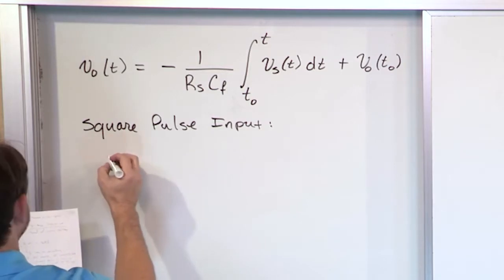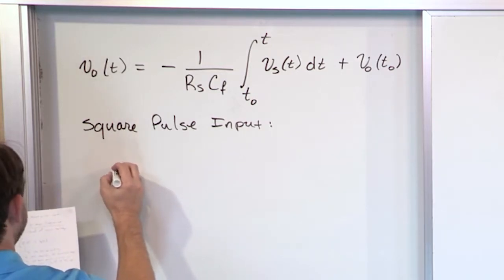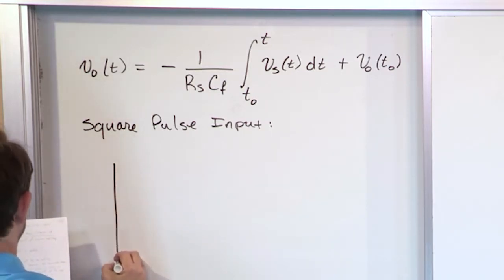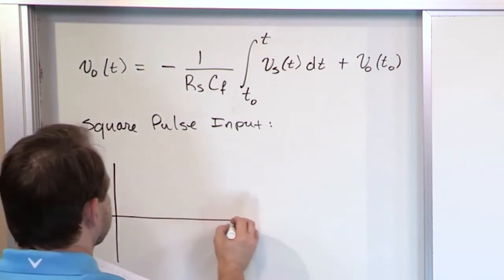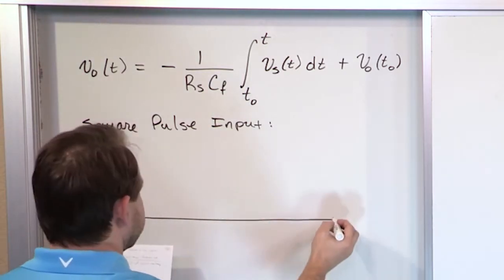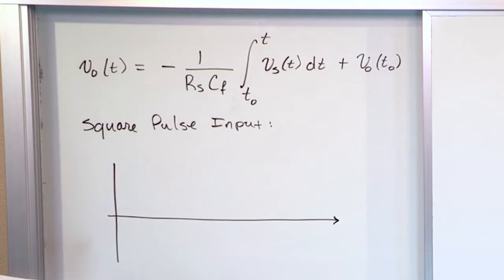So what I want to do is draw an axis right here. Something like this. And then we're going to have a tick mark here. We're going to call this 3 volts. We're going to have a tick mark here. We're going to call this negative 3 volts. This is going to be the source voltage V sub S that's going into the amplifier.